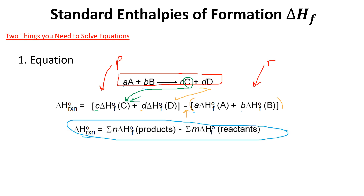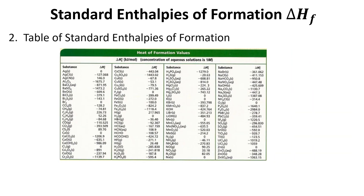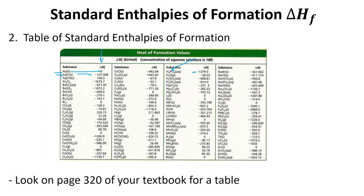We also need a table of formation values, which you can find by searching online or on page 320 of your textbook. For example, silver in its solid state has ΔHf° = 0, but silver chloride has a value of −127 kJ/mol. Phosphoric acid, which we just worked with, also has a table value.